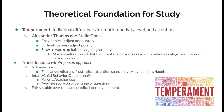This theory was founded by Alexander Thomas and Stella Chess. With their experiments and scientific research, they found that it would be easiest to experiment with babies since they started at the beginning of development. They found that there were three categories: easy babies, difficult babies, and slow-to-warm-up babies.